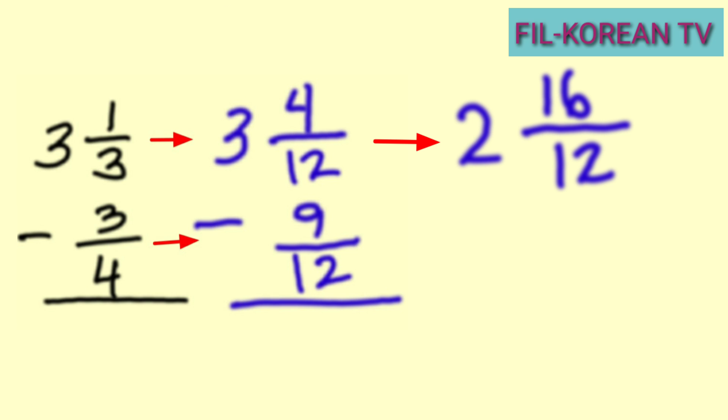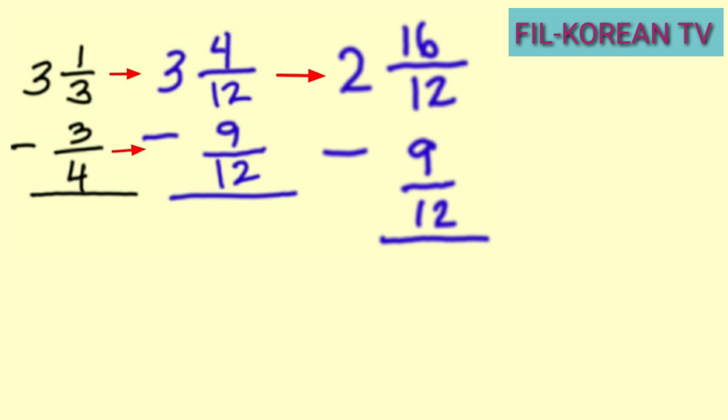Then, write the subtrahend 9 twelves. The fraction now in the minuend is greater than the fraction in the subtrahend, so we can subtract now. Let's subtract now.